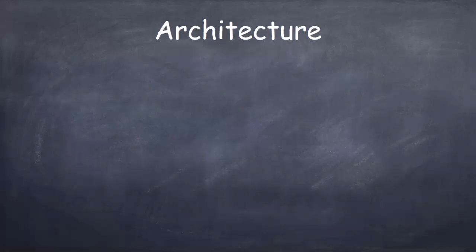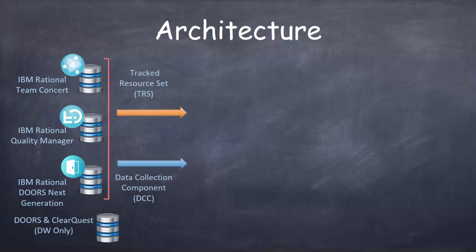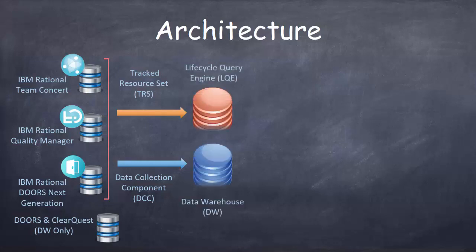Each of the IBM applications that help you manage your end-to-end delivery lifecycle — Rational Team Concert, Rational Quality Manager, Rational Doors Next Generation, and even Doors and ClearQuest legacy products — deliver data to what JRS calls a data source. They do this automatically via tracked resource set or TRS feeds and also via data collection jobs that can be scheduled. There are two supported data sources: the Lifecycle Query Engine or LQE, and the Relational Data Warehouse.